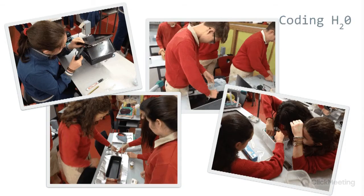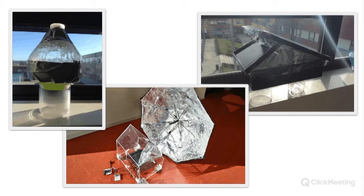Here you can see pictures of students preparing and building their solar stills after the research and design process. This is one of the more complete ones — you can see a sensor connected to the microcontroller, and to the left there is a big umbrella covered in aluminum foil. The students thought that using this would concentrate the radiation from the sun, making the solar still more efficient.